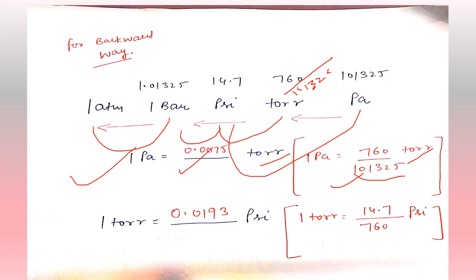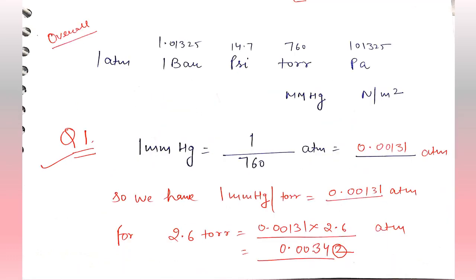Now converting torr into psi going backward. Simply divide by 760, and we get 0.0193. The series in order is: atm, bar, psi, torr, pascal.